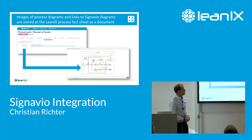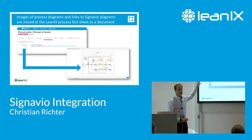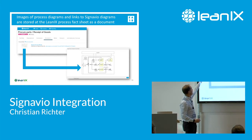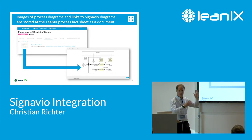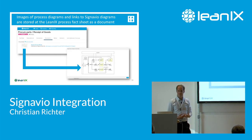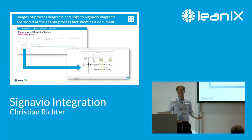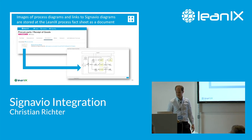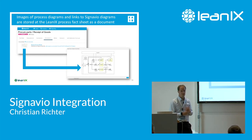'Receipt of Goods' is a level-two process owned by 'Procure Parts'. The value-add on the LeanIX end is that you have the general fact sheet view with all attributes and lifecycle. There is also a document section that gives you a link to the Signavio collaboration hub or the ability to view the process there. On the other hand you get a small picture showing how the process looks and where that IT system is actually placed in it, without having to go to Signavio.